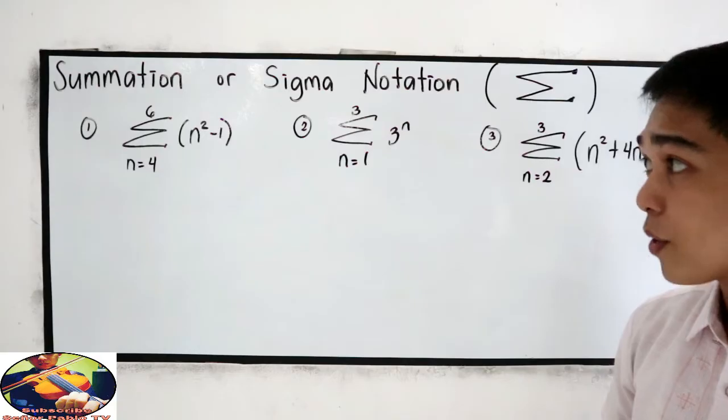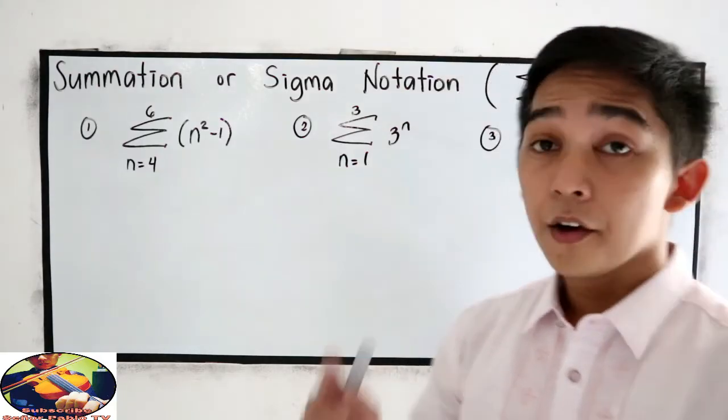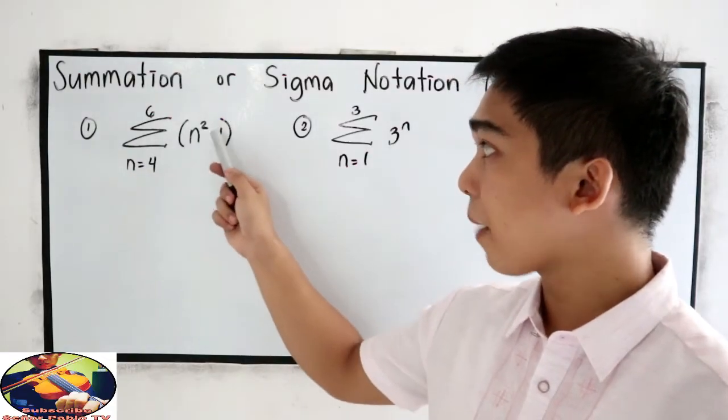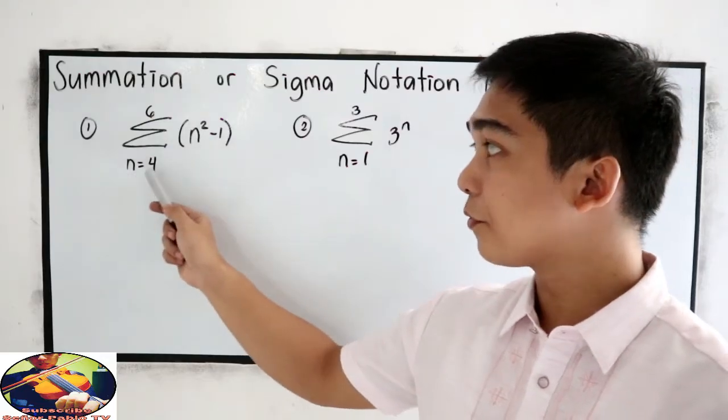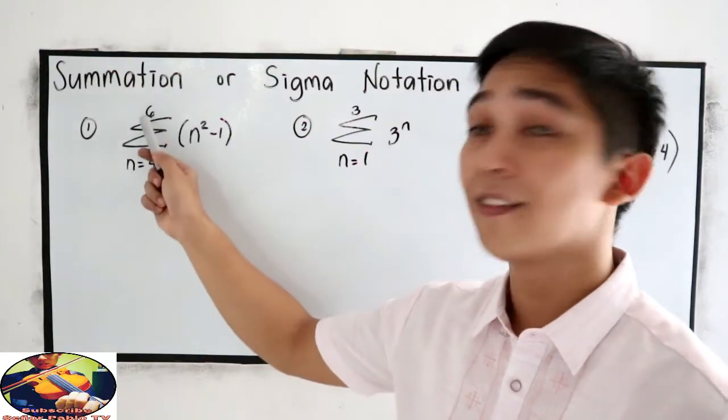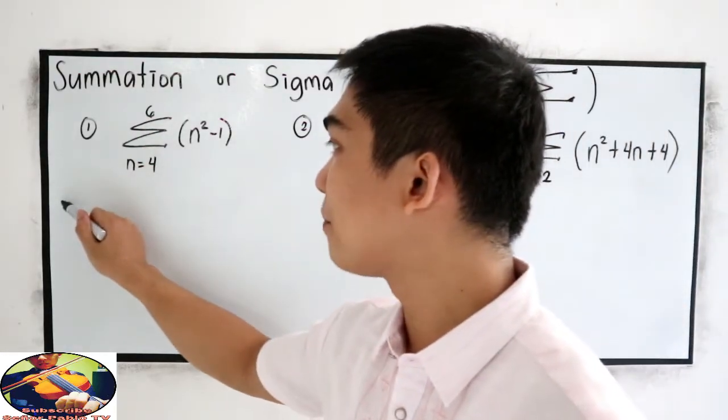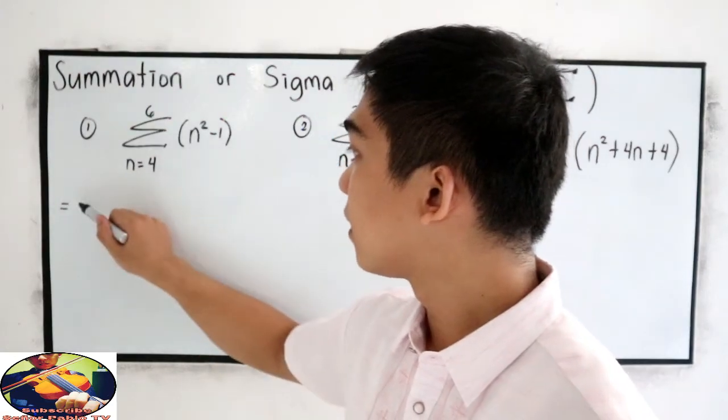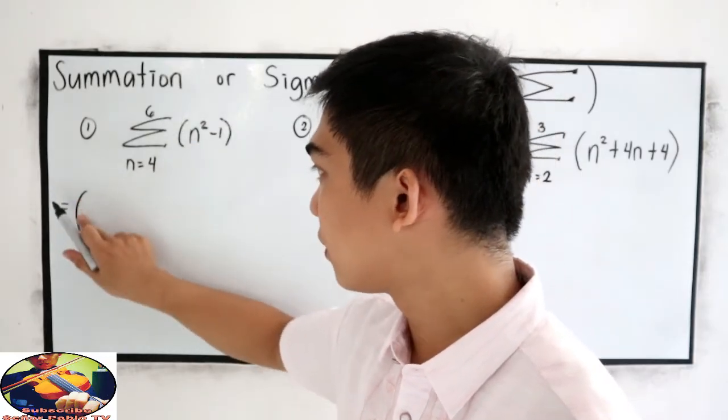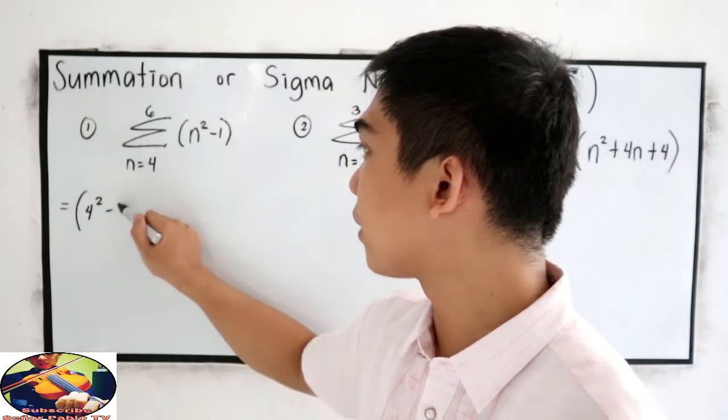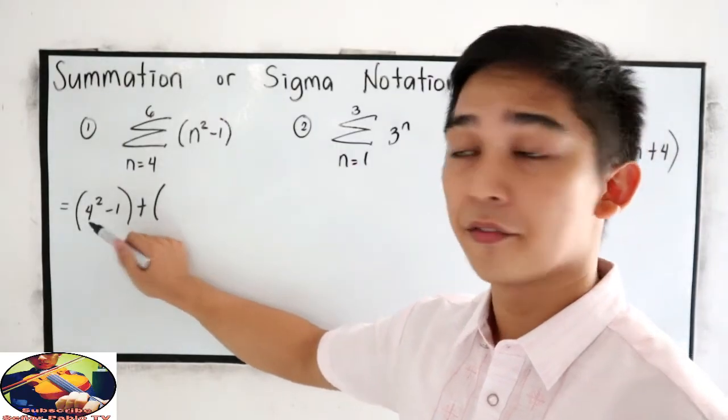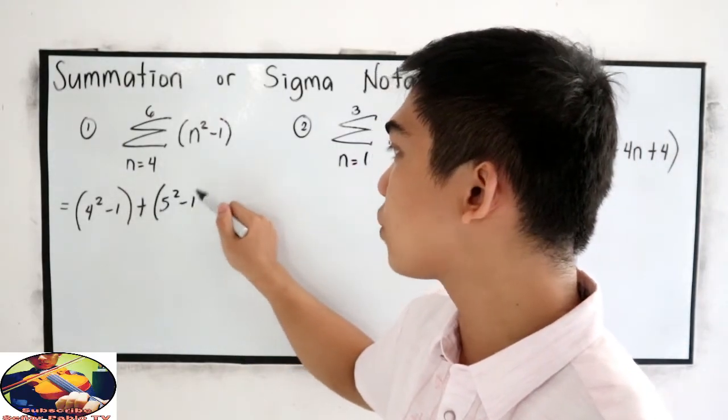Now I will try number 1. First, let us read the given: summation of N squared minus 1, from N equals 4 to 6. So we are going to start at 4 and end at 6. So we have 4 squared minus 1, plus 5 squared minus 1, plus 6 squared minus 1.